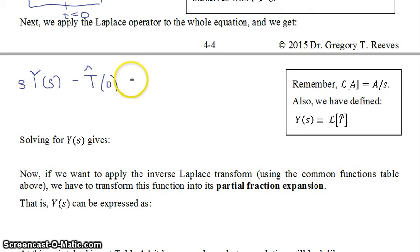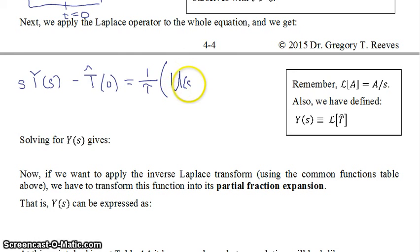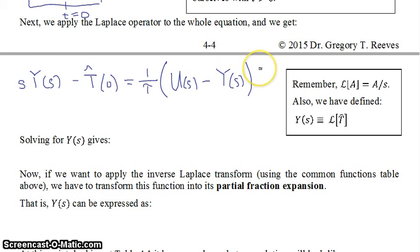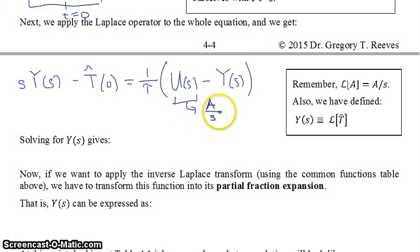Setting that equal to 1 over tau times the Laplace transform of u-hat, which is U(s), minus the Laplace transform of T-hat, which is Y(s). The Laplace transform of our step change is A over s.